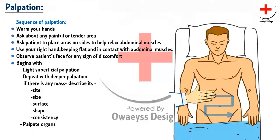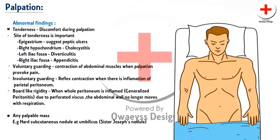If you detect any mass, note its characteristics, which may include its site, size, surface, shape, and consistency. Abnormal findings include tenderness — its site is very important. Tenderness in the epigastrium may suggest peptic ulcers; in the right hypochondrium it suggests cholecystitis; in the left iliac fossa for diverticulitis; and in the right iliac fossa it suggests appendicitis.